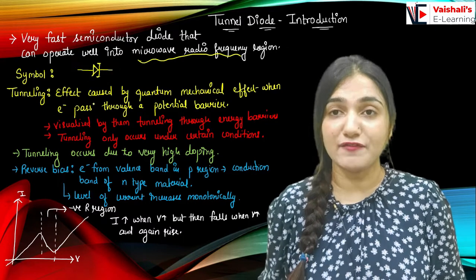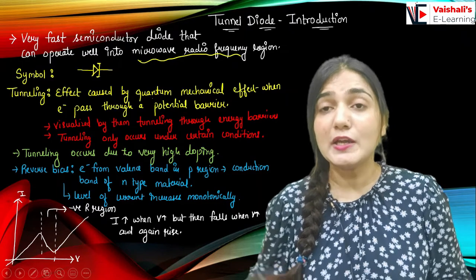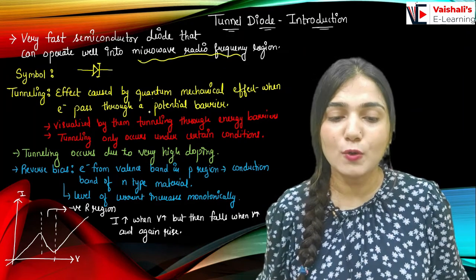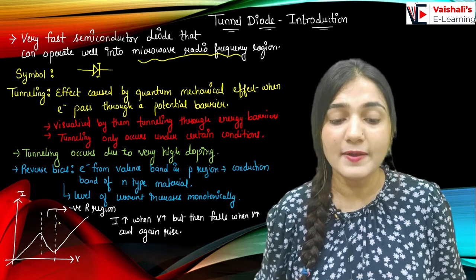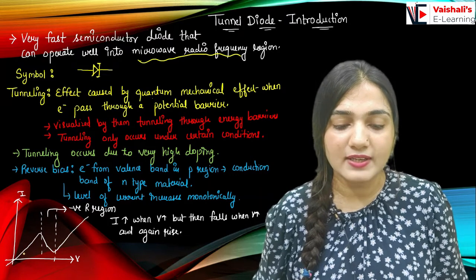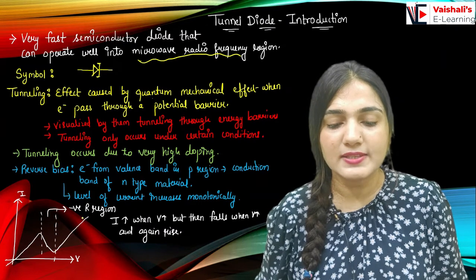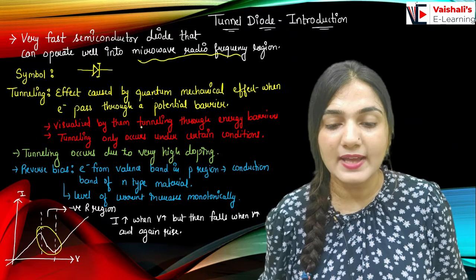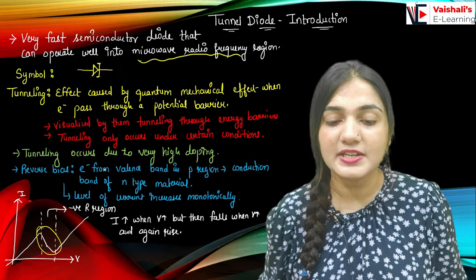The tunnel diode is based upon the tunneling effect. The tunneling effect is a quantum mechanical effect caused when an electron passes through a potential barrier. Whenever an electron is passing through a potential barrier, there is a quantum mechanical effect due to which we observe tunneling. In the characteristics, you can see the current increases as voltage increases, but then we have a negative resistance region where current decreases with increasing voltage, and then current rises again. This region shows the tunneling effect, visualized by electrons tunneling through energy barriers.